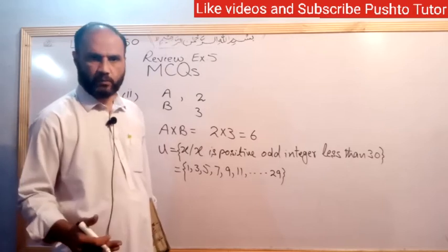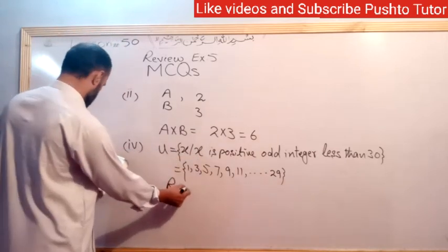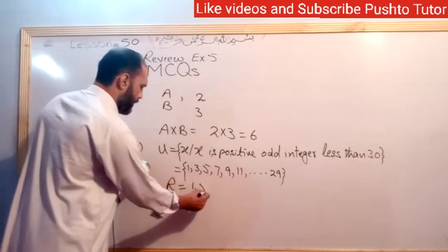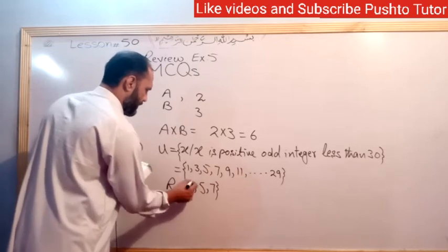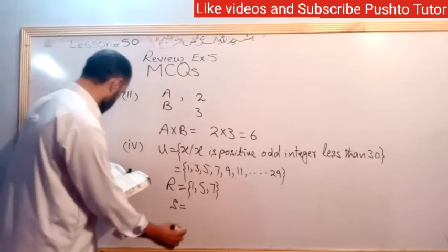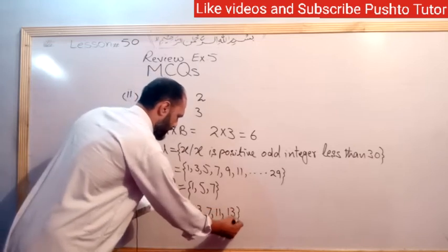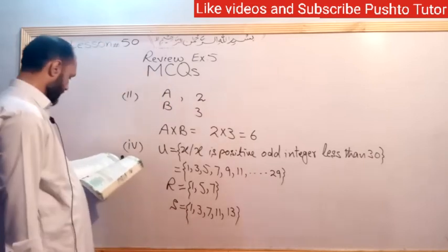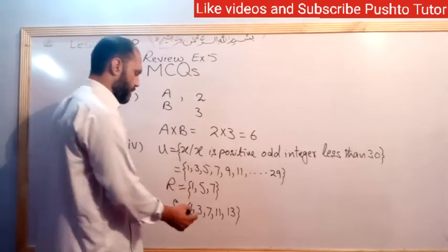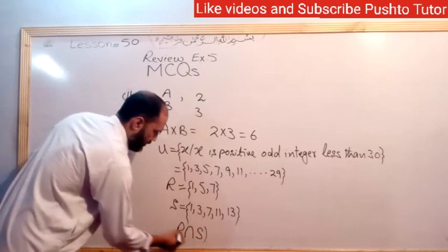Question 5: Given set R with elements 1, 5, 7, and set S with elements 1, 3, 7, 11, 13. Find R intersection S whole complement.